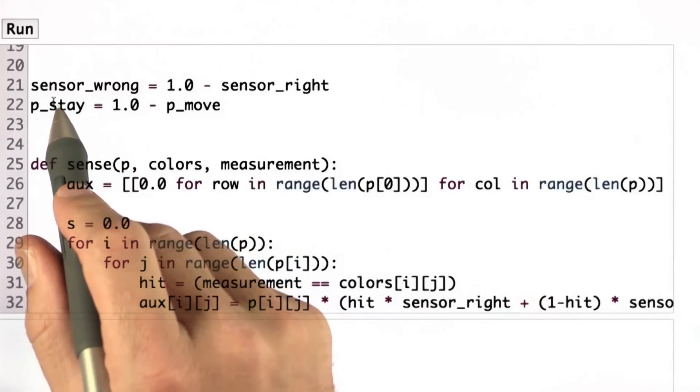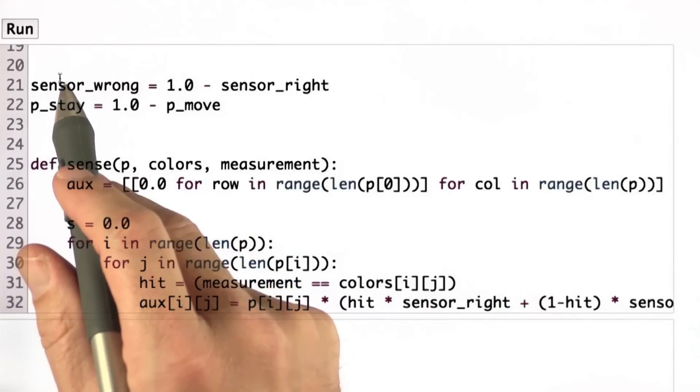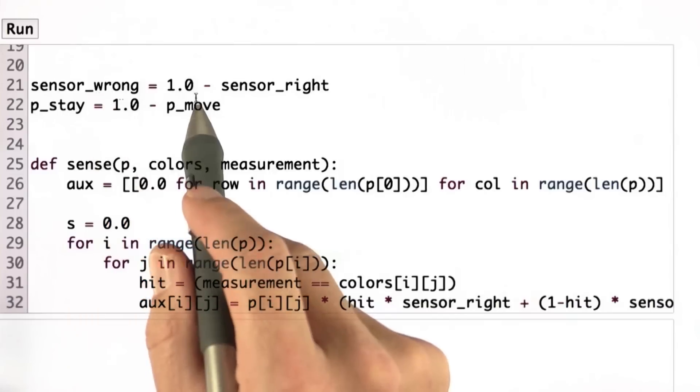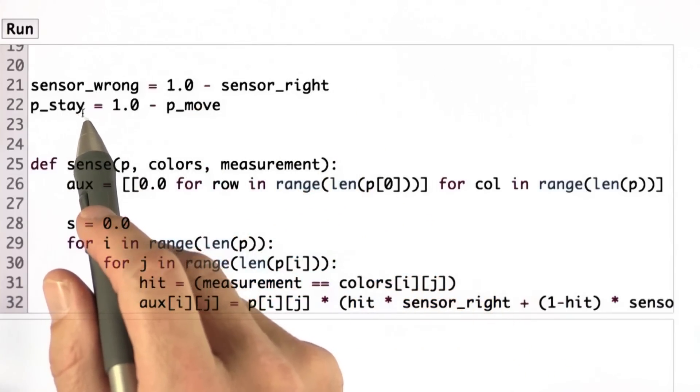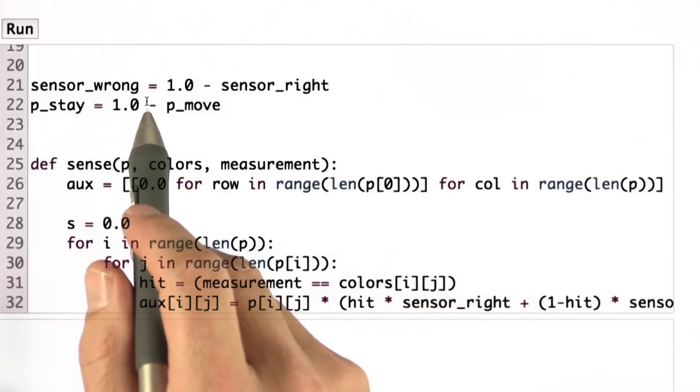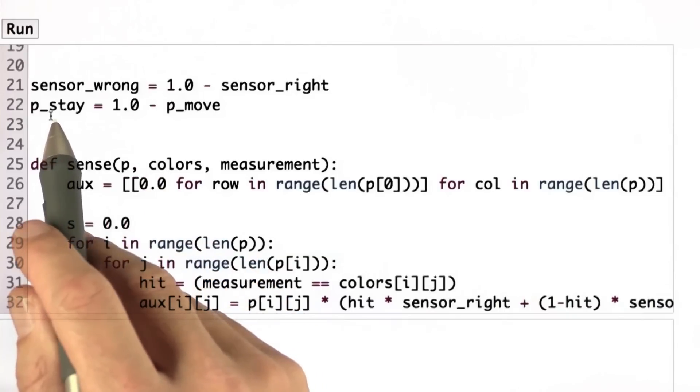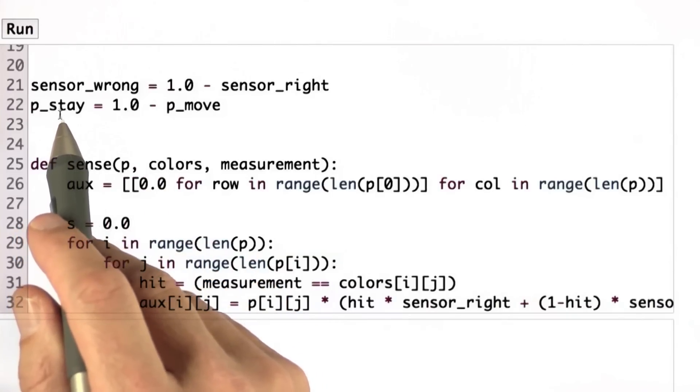So here's my solution to the programming assignment, and it's quite straightforward given the class, but I'm really proud if you got it correct, because it enabled you to program your own localization algorithm very similar to the way we do it at the Google self-driving car.